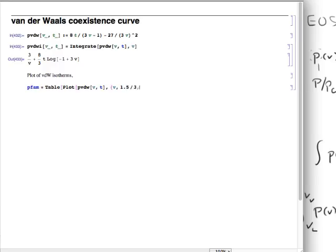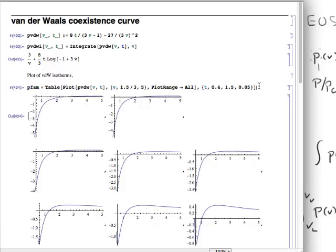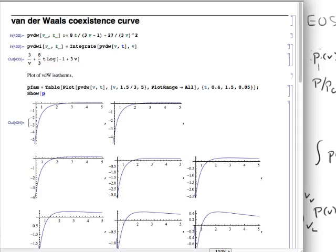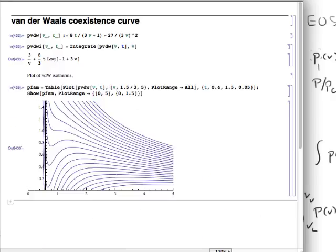And, I will choose some range for the V, which turns out to show me something reasonable. And, some range of temperature that turns out to show me something reasonable in terms of van der Waals loops. Whoops. I didn't want to do it like that. I wanted to show all those plots together.